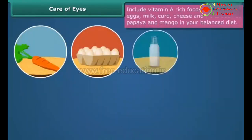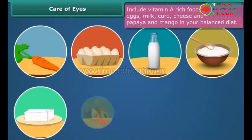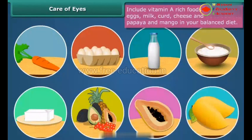Include vitamin A rich foods like carrots, eggs, milk, curd, cheese, and fruits such as papaya and mango in your balanced diet.